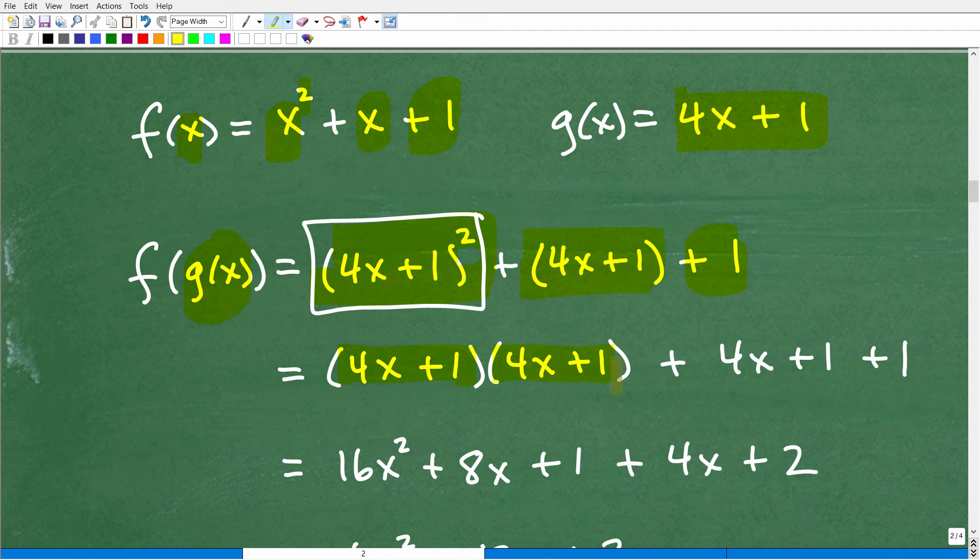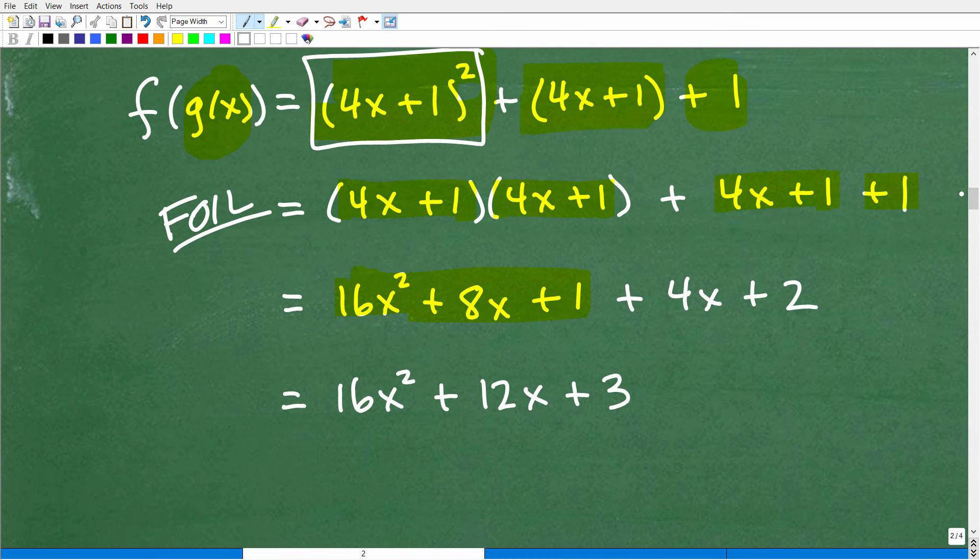So that's the first thing you need to do is make sure you set up these problems correctly. Before you get going into the algebra, make sure everything looks right, you plugged in everything correctly. So we have to figure out what 4x plus 1 squared is. That's 4x plus 1 times 4x plus 1 plus 4x plus 1, plus 1. So 4x plus 1 times 4x plus 1 is 16x squared plus 8x plus 1.